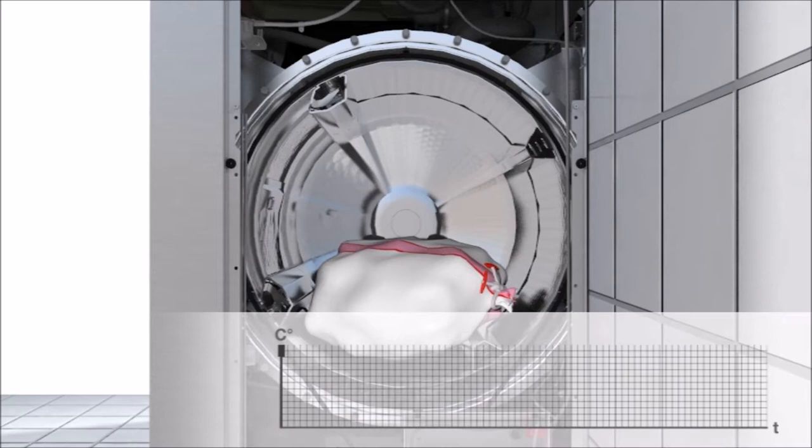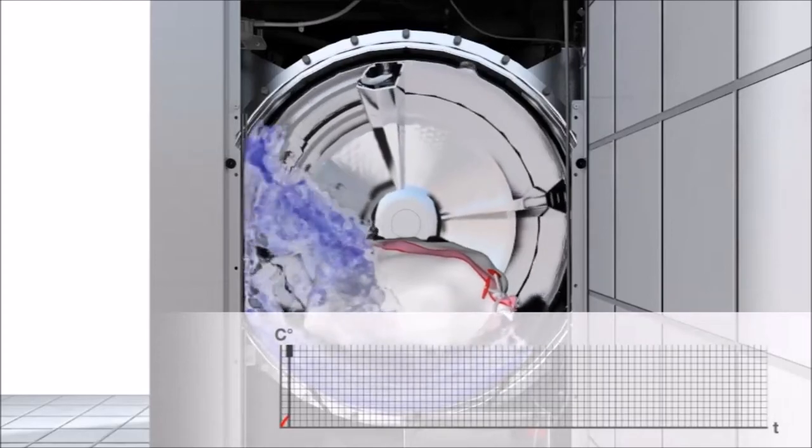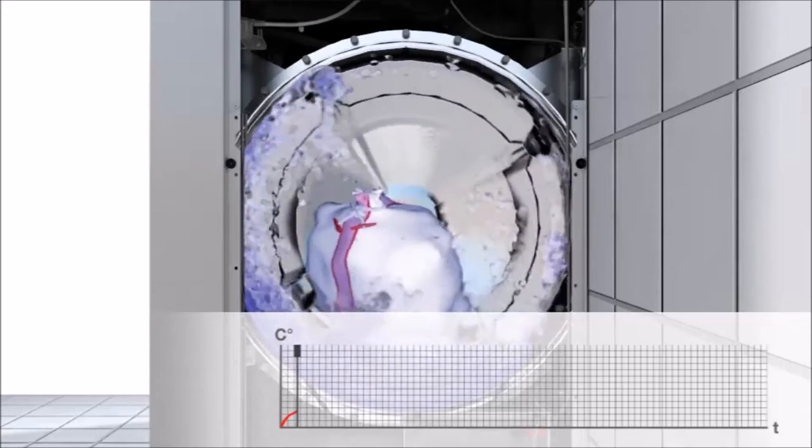Miele making life simple. At the beginning of a wash cycle, water enters the drum and the drum begins to rotate. Scoop and ladle technology ensures that laundry is wetted quickly.